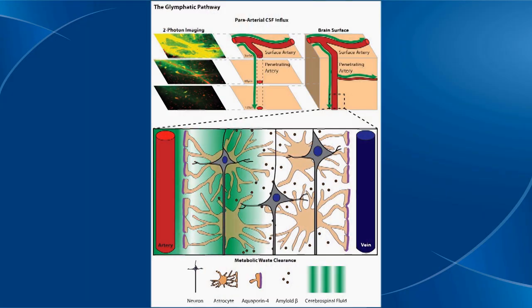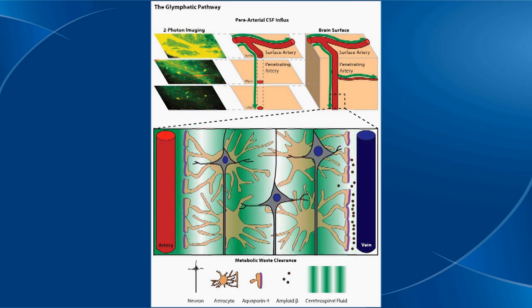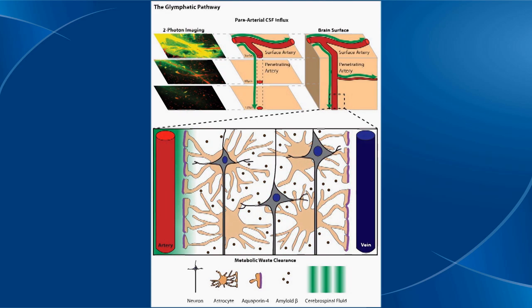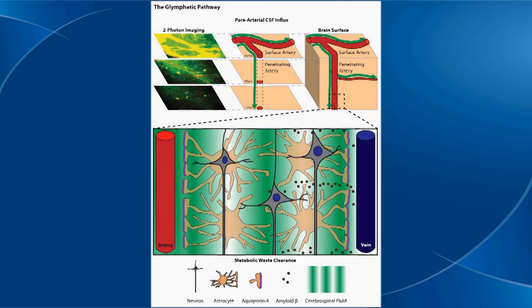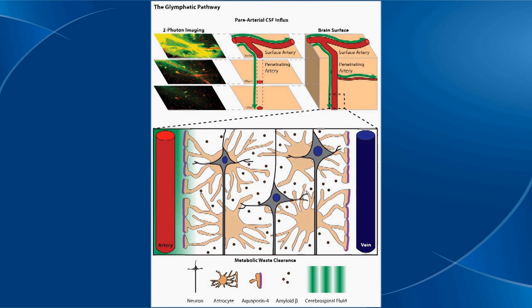As it moves into the brain tissue, eventually, if you look long enough, where it collects is at the other end, at veins, which are another part of the circulation. Once it reaches those veins, it's able to drain out of the brain along the outside of the veins.